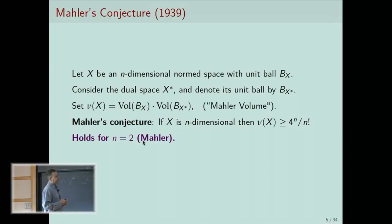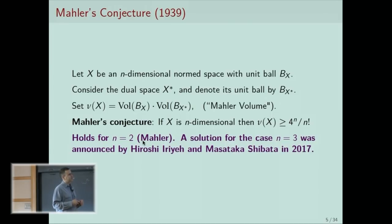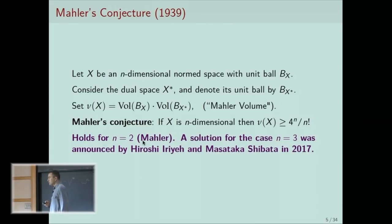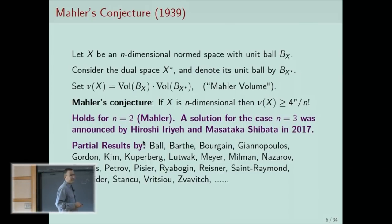Mahler gave a proof for n equals 2 in the plane in 1939. And it's been 80 years going from n equals 2 to n equals 3. Very recently, it was announced by Irie and Shibata that Mahler's conjecture also holds for dimension 3. The reason there is this 80-year gap between n=2 and n=3 is not because this conjecture was forgotten — throughout the years, many people tried to attack Mahler's conjecture, and it would be impossible to do real justice to the full history.